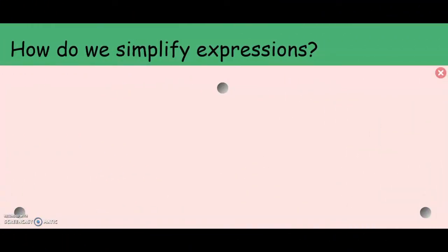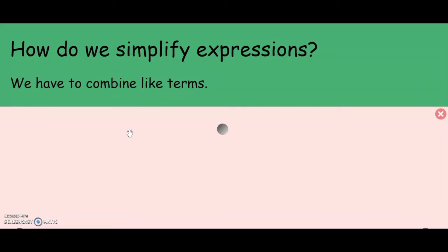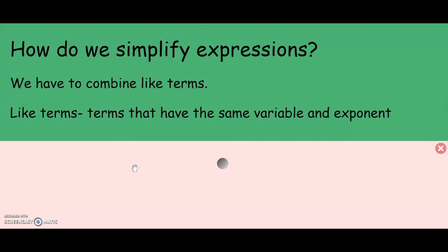Today we are going to talk about how to simplify expressions. To simplify expressions, we have to combine like terms. Like terms are terms that have the same variable and exponent. Remember that a variable is the letter representing a number value, and the exponent is the small number that tells us how many times to multiply that term.